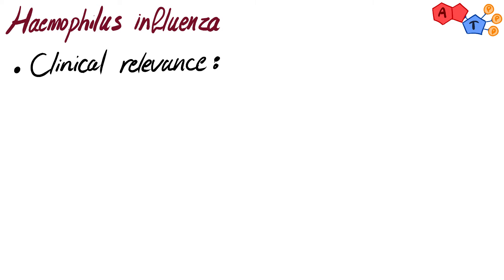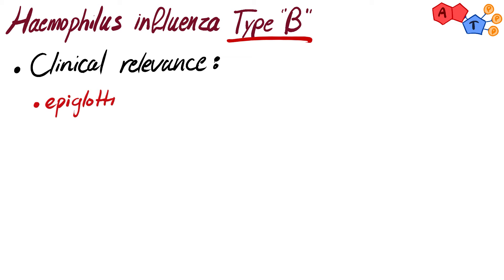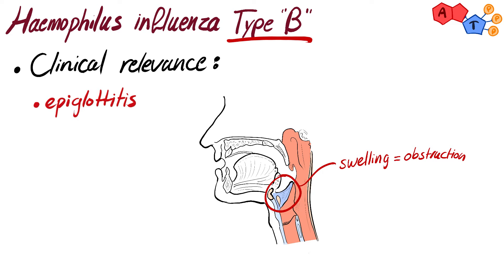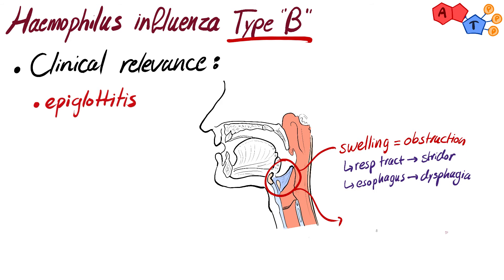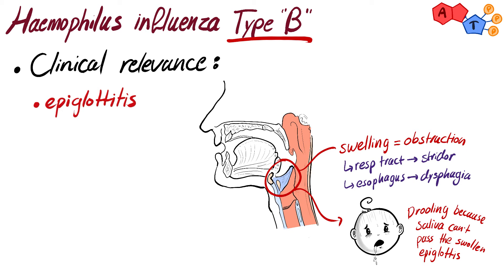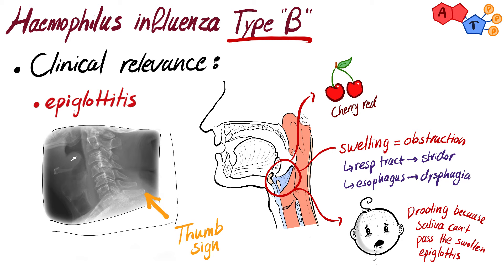Now let's get to the clinical relevance, focusing on diseases caused by H. influenzae type B. The first disease is epiglottitis. H. influenzae type B can cause swelling of the epiglottis, resulting in obstruction of the respiratory tract and esophagus, causing the child to develop stridor — a high-pitched wheezing sound from disrupted airflow — and dysphagia, meaning difficulty swallowing. The child will also present with drooling because saliva is unable to pass the swollen epiglottis. On examination, the swollen epiglottis appears cherry red, and on X-ray it's characterized by the thumb sign.